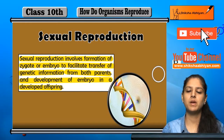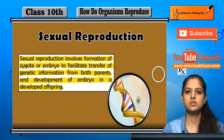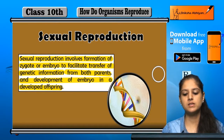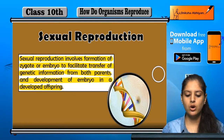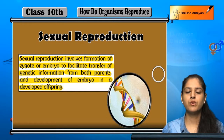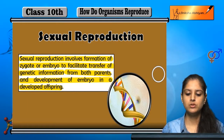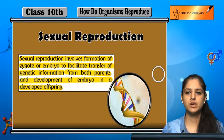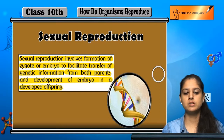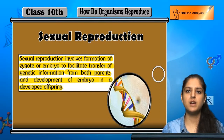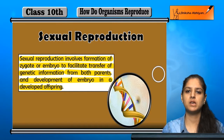The child has some similar characteristics from the parents — it inherits from them. The embryo is developed into a developed offspring. This is what sexual reproduction is. Now, how do we talk about sexual reproduction in plants and human beings?